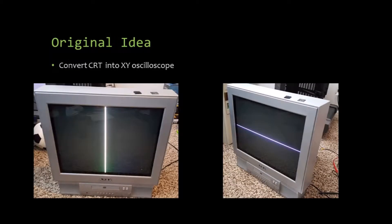The original idea for the project was to convert an old cathode ray tube television set into an XY oscilloscope and use that to display the images. This can be done by disconnecting the deflection coils. When you disconnect the horizontal coils, a vertical line appears, and when you disconnect the vertical coil, a horizontal line appears. All I had to do was connect the audio source to the deflection coils and I would have an XY oscilloscope.